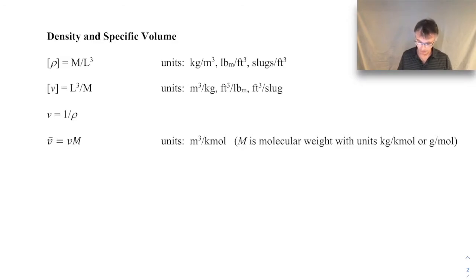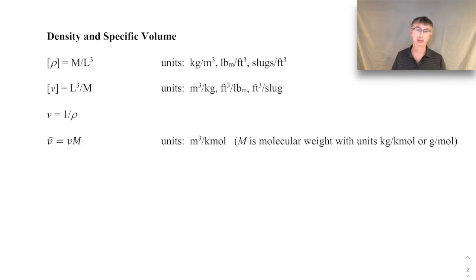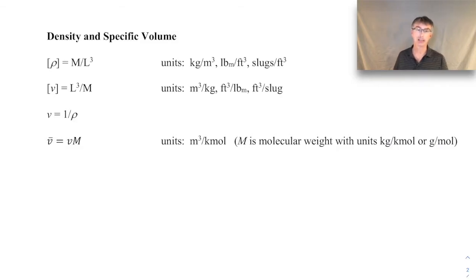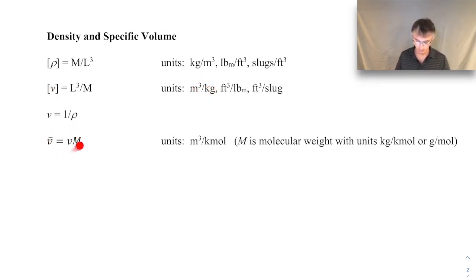One other specific volume-related quantity is the molar specific volume, given as little v with a bar above it. That is specific volume times the molecular mass M, with units of cubic meters per kilomole. A mole is just a measure of the number of items — like the number of molecules of a particular substance. M is the molecular weight or molecular mass, with units of kilograms per kilomole or grams per mole. We don't use molar specific volume too often, but it does pop up occasionally.